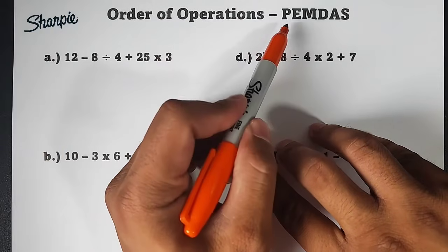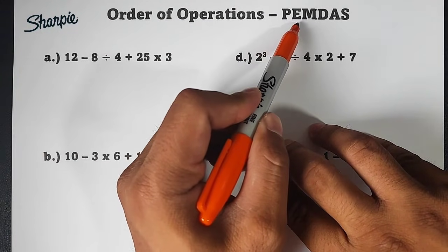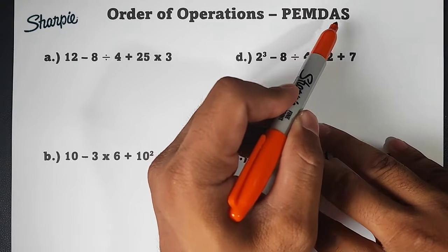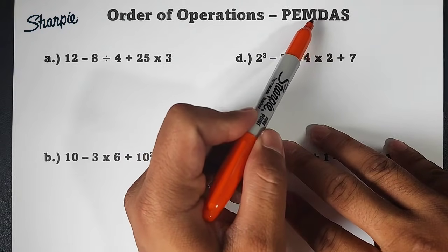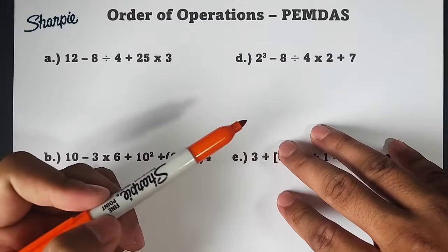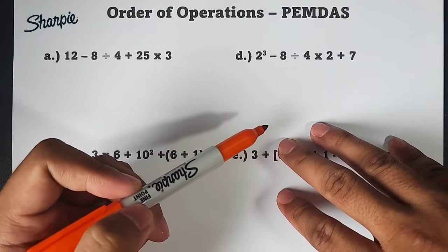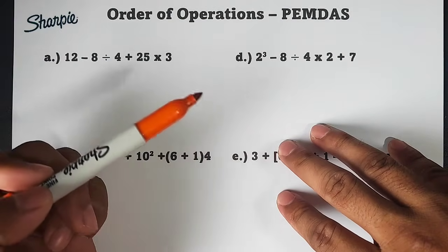So when we say PEMDAS, this is parentheses, exponent, multiplication, division, addition, and subtraction. Let me clarify, when you encounter multiplication and division, you might think multiplication should come first. No. The case here is they can interchange who comes first. It's either multiplication or division.